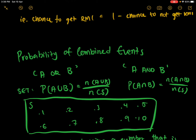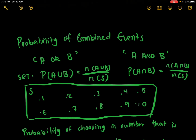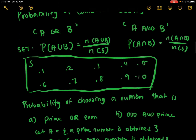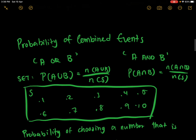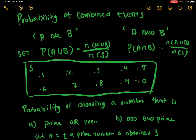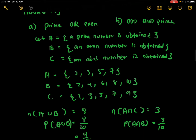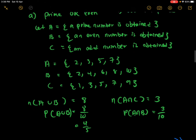Probability of combined events — there are two types: A or B, and A and B. A or B means you can have something that fulfills A, or something that fulfills B. For example, in these 10 numbers I want to choose a number that is prime or even. Prime numbers include 2, 3, 5, and 7. Even numbers include 2, 4, 6, 8, and 10. Since there are 8 possible values I can get, the probability will be 8 over 10, or 4 over 5.